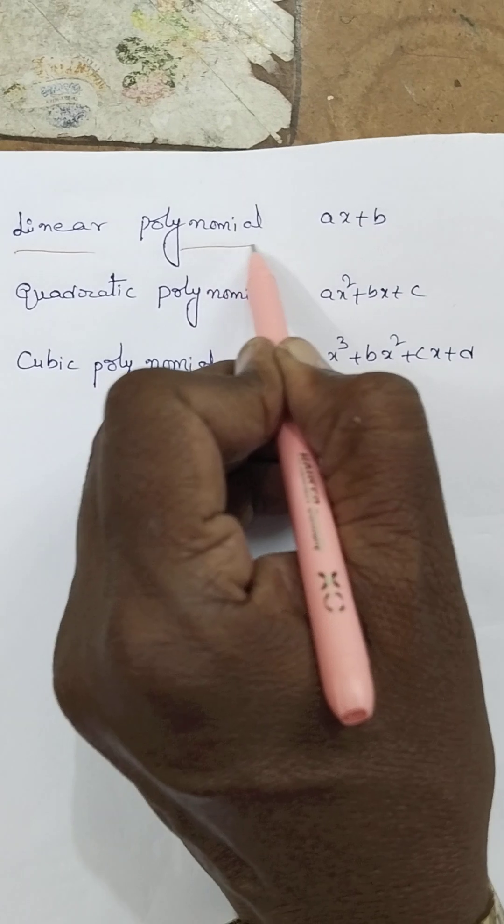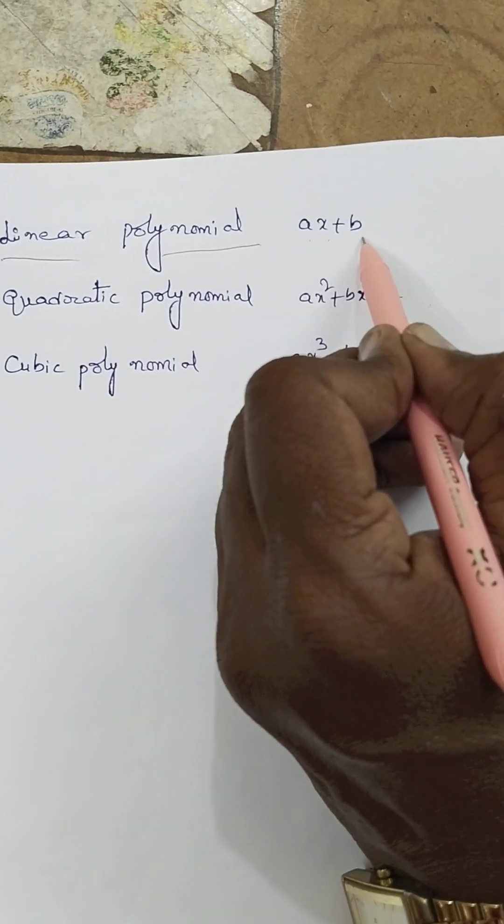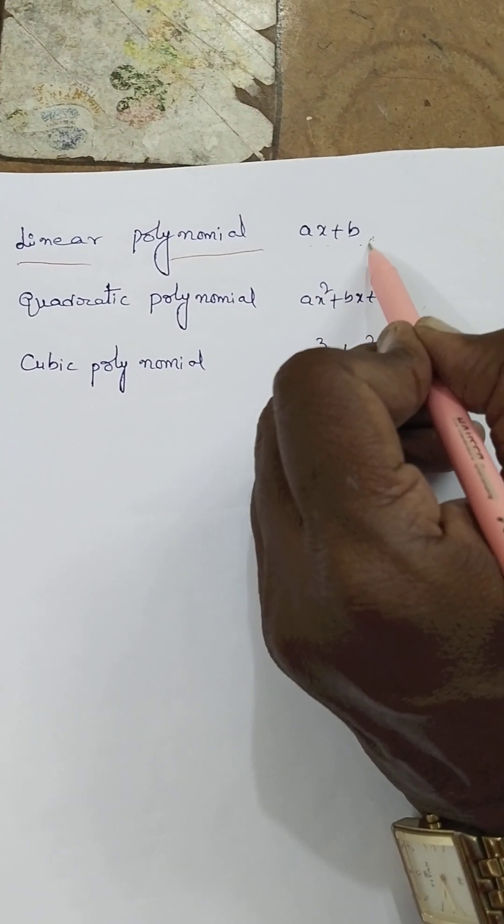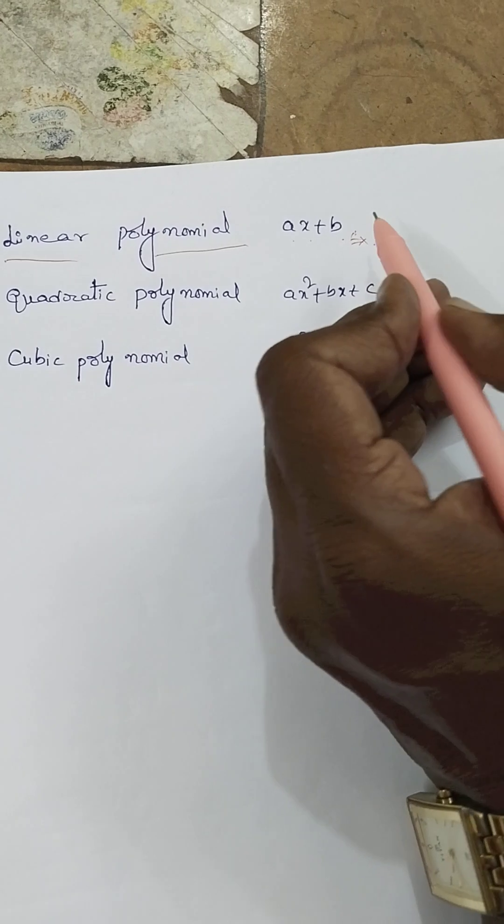First one is the linear polynomial, this one. Ax plus b. Suppose give an example already I explained in the previous video.